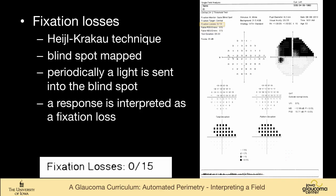So fixation losses are tested with what's called the Heijl-Krakow technique, where the perimeter maps the blind spot right here. And periodically, a light is sent into the blind spot. And if the patient responds to that, then there must be retina where the blind spot's supposed to be. And that's considered a fixation loss.